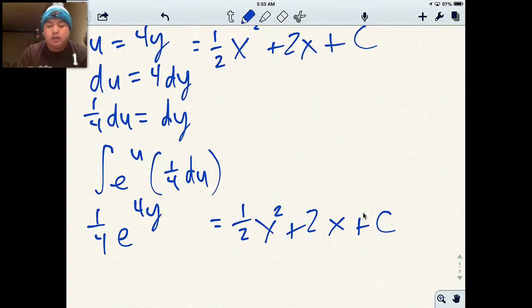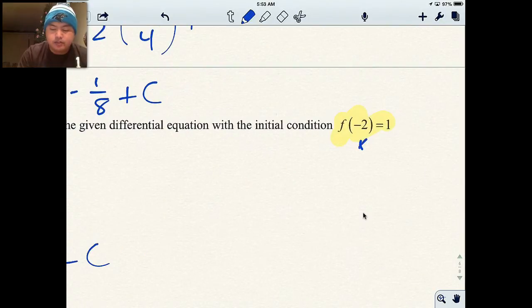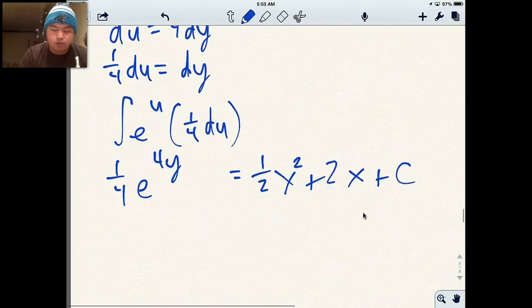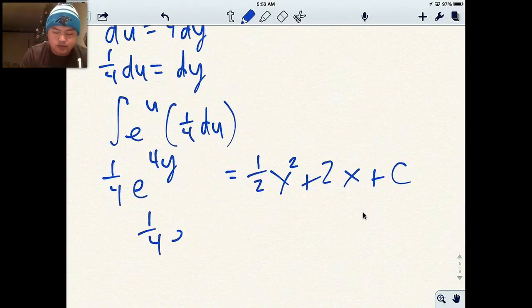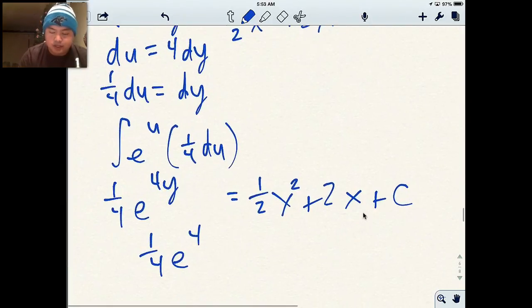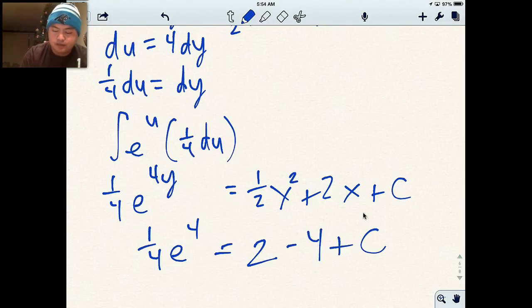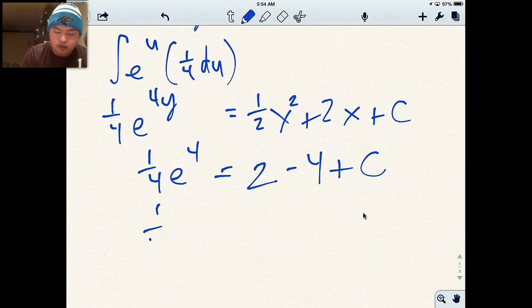Now what do you do? You look at your initial condition. X is negative 2. Y is 1. So x is negative 2. Y is 1. If y is 1, this becomes e to the 4. And then x is negative 2. So I'm going to have to plug in negative 2 into two places. Negative 2 squared is 4, and 4 times half is 2. And then 2 times negative 2 becomes minus 4 plus c. This becomes 1 fourth e to the 4 equals negative 2 plus c.